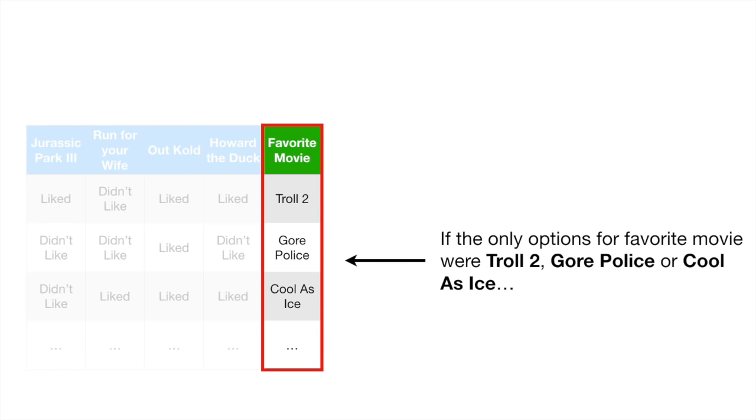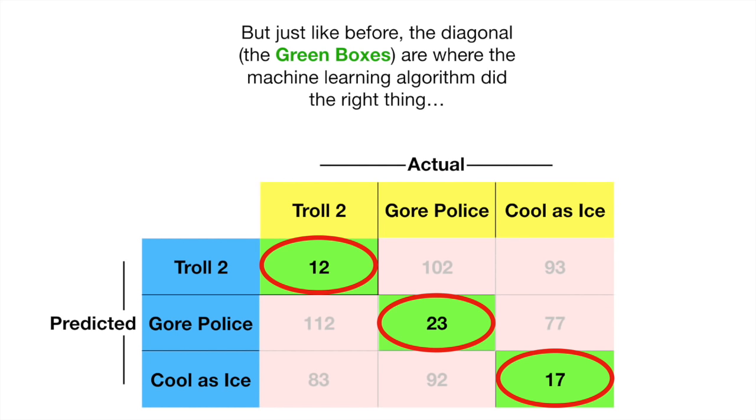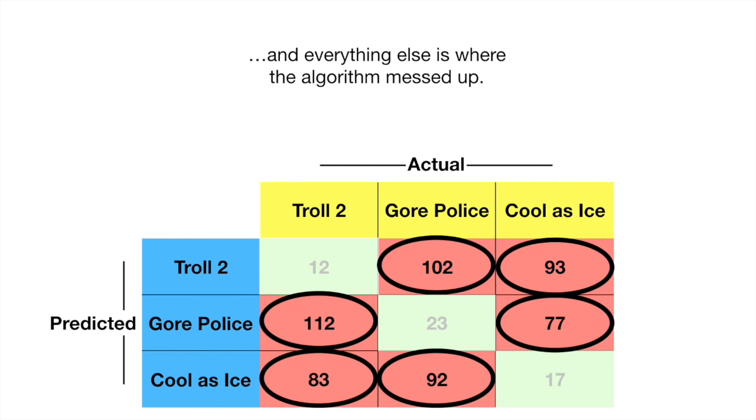If the only options for favorite movie were Troll 2, Gore Police, or Cool as Ice, then the confusion matrix would have three rows and three columns. But just like before, the diagonal, the green boxes, are where the machine learning algorithm did the right thing, and everything else is where the algorithm messed up.